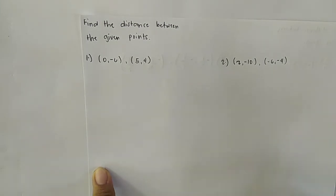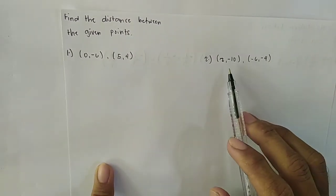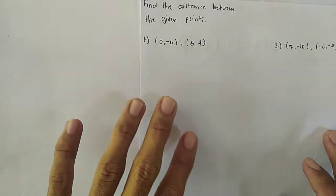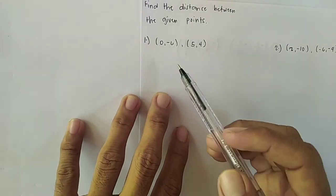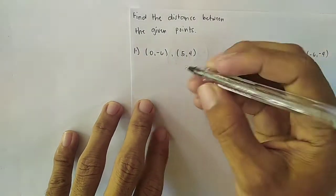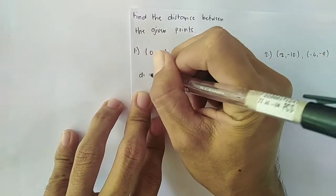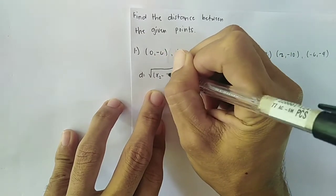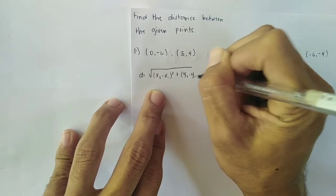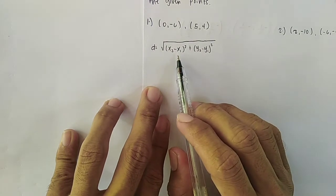Find the distance between the given points. For number one we have the points (0, -6) and (5, 4). For number two we have (2, -10) and (-6, -4). Our purpose here is to get the distance between these two points. The distance formula takes the form: D equals the square root of (x₂ minus x₁)² plus (y₂ minus y₁)².